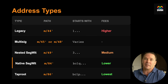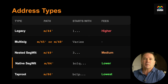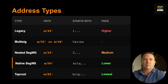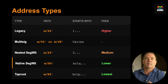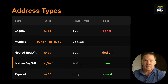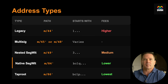Legacy addresses were the original — they work everywhere but fees are higher. Multi-sig was introduced in 2012 and became more useful in 2014 when M/45 was introduced, with modern updates in 2019 with the M/48 standard. SegWit addresses — nested and native — were created to make transactions smaller and cheaper. Taproot, the newest type, added privacy and even lower fees for certain transactions.